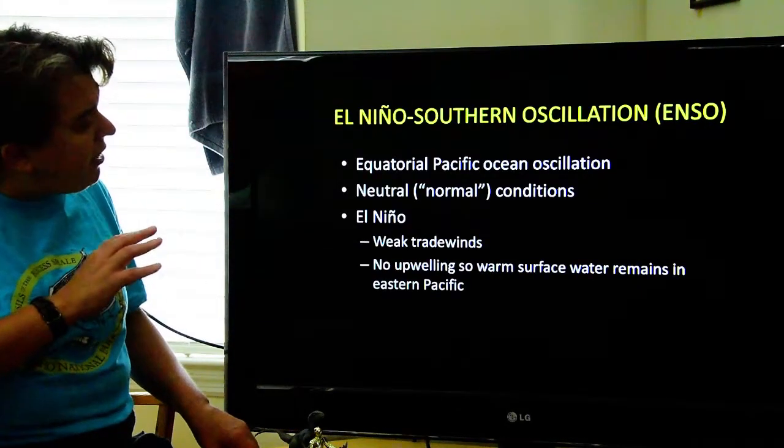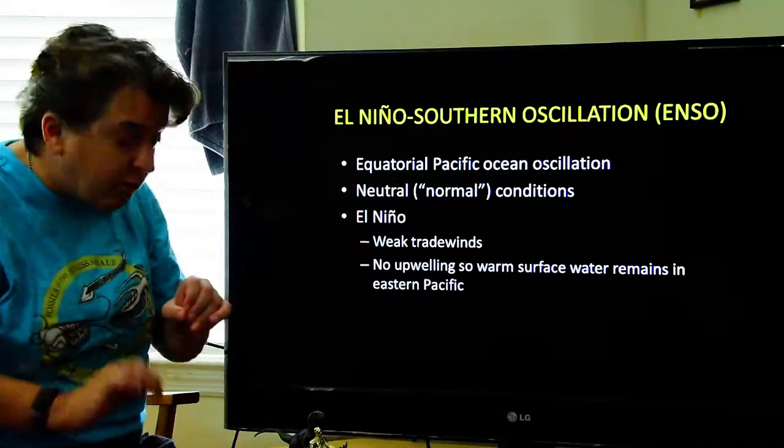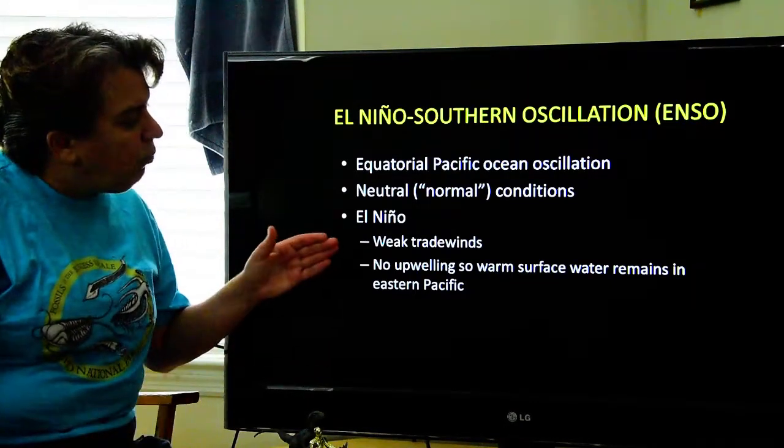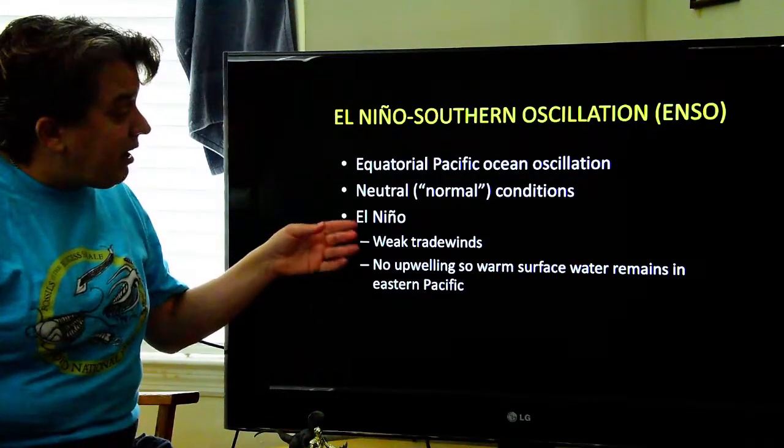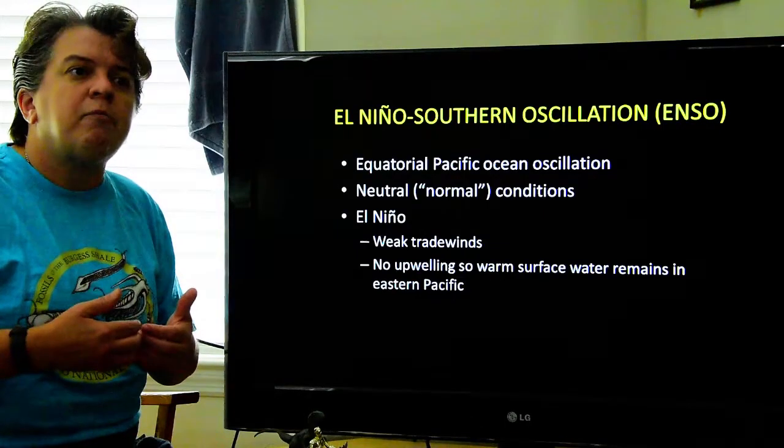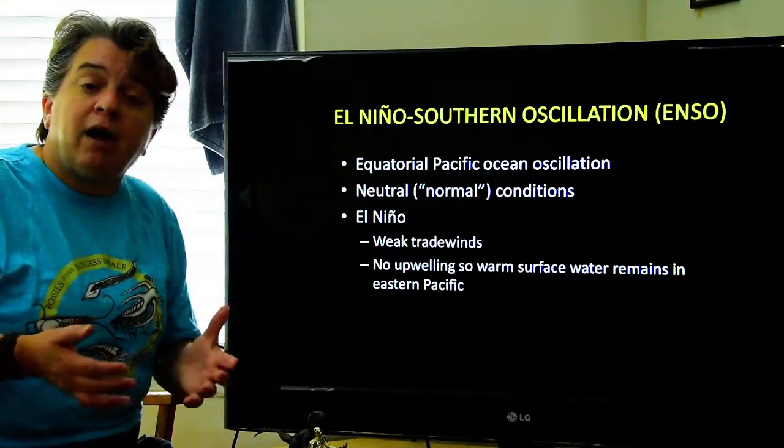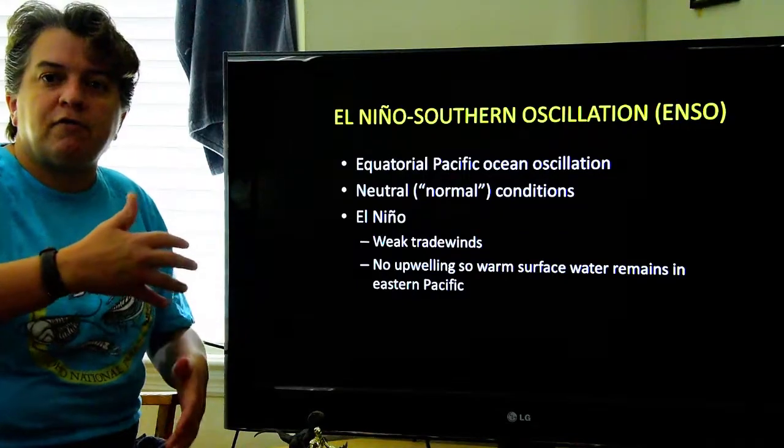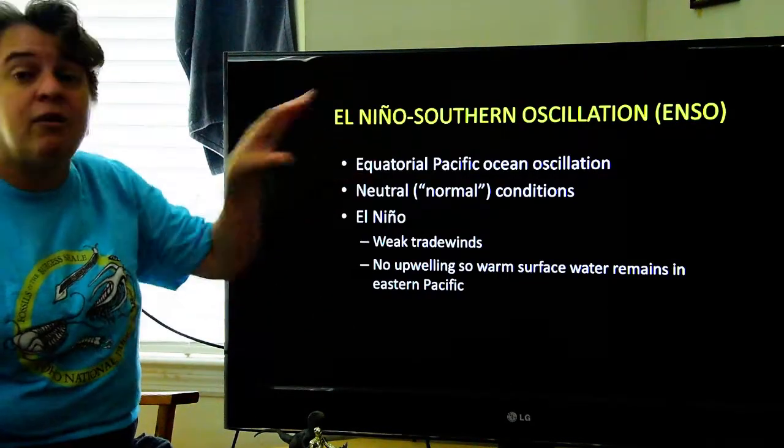But what happens in an El Niño is that the trade winds become weaker. So they no longer push that warm surface water away. So in the coastal waters of South America, instead of having cold water, we get warm water. And this ends up not being so good for the fish there because now those nutrients aren't there. And the first people to document this happening were some of the colonists, the Spanish colonists who were there. And they noticed this also happened usually around Christmas time. So they named the event El Niño, the child, in reference to it's Christmas, in reference to the Christ child. And that's how it got its name. Today we call it the El Niño Southern Oscillation.